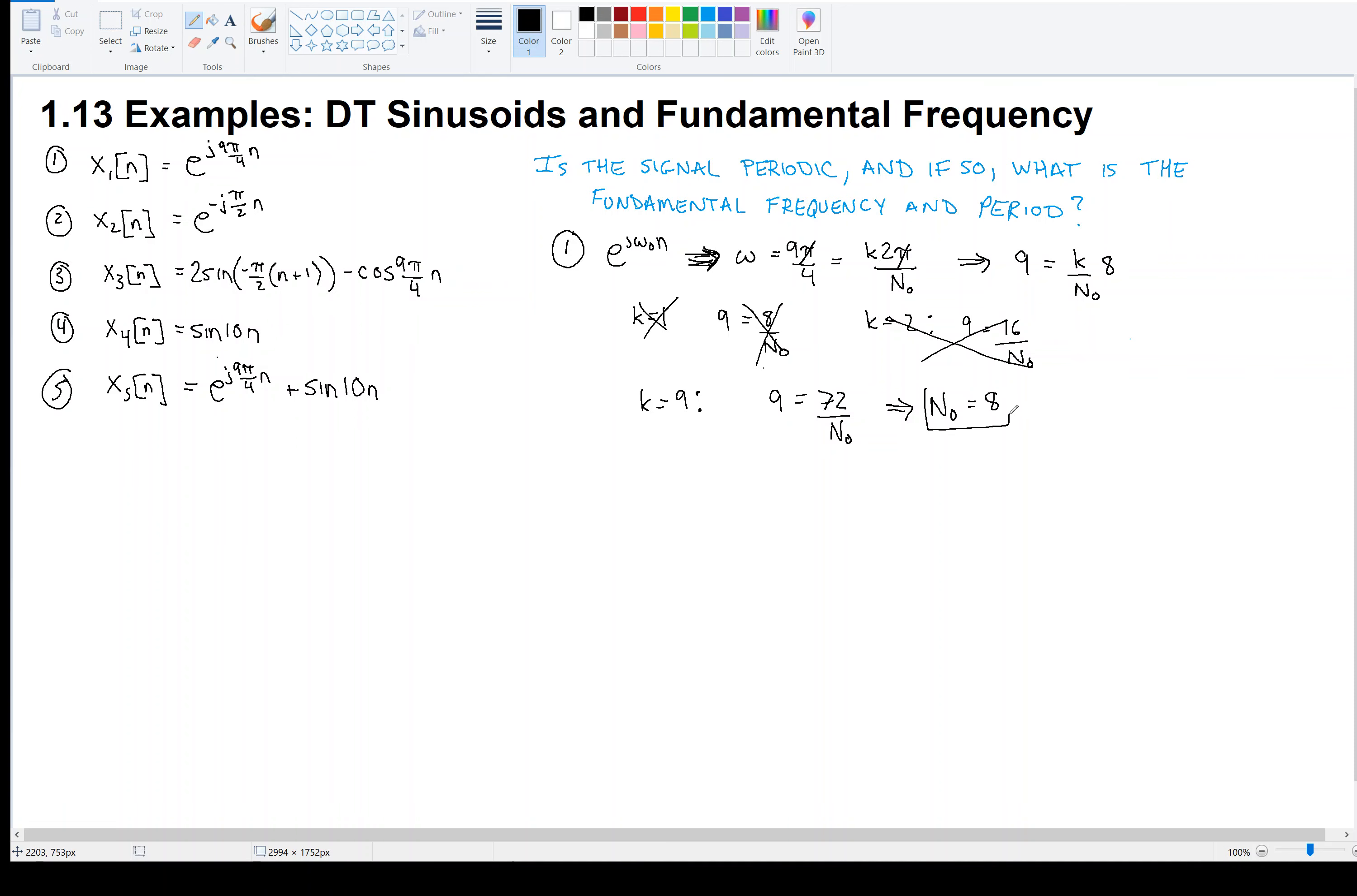So this is the fundamental period of signal 1 here, x₁[n] = e to the j9π over 4n. And so that means the fundamental frequency is 2π over n₀, which is 2π over 8 or π over 4. That is the fundamental frequency of this guy. If you're a good student and very observant, you will remember from the last video that we said π over 4 and 9π over 4 are the same frequency. So there we have it. We would say this is the fundamental frequency here, π over 4. So we answer yes, this is periodic and there are fundamental periods and frequency.